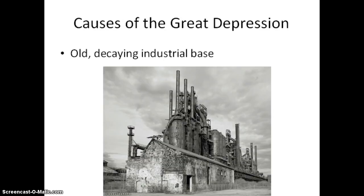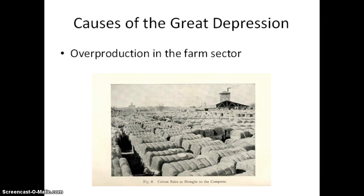Some of the causes of the Great Depression are as follows. America had an old, decaying industrial base — many factories and infrastructure had not been updated. There was extreme overproduction in the farm sector. We no longer had the markets to sell to in Europe, as they began to produce their own food, and so farmers produced too much, driving down the prices for their goods.